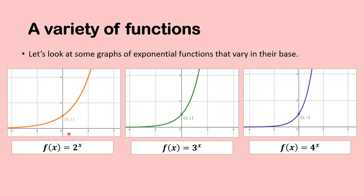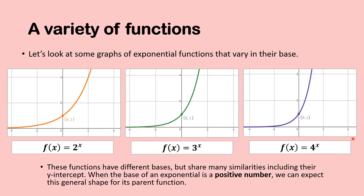These functions with different bases share many similarities, including their y-intercept at (0, 1). When the base of an exponential is a positive number greater than 1, we can expect this general increasing, upward-sweeping shape for the parent function. The steepness depends on the value of the base.